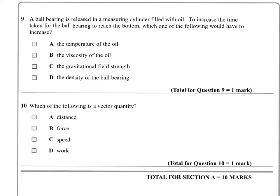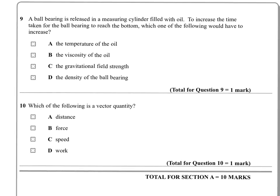The temperature of the oil? No, because if you increase the temperature, you make it more runny, less viscous with less drag. The viscosity of the oil? That would start to hold it up, so that's a possibility. The gravitational field strength? No, that would make it fall faster. The density of the ball bearing? Again, that would produce more downward force and make it fall faster. So we're looking at B there.